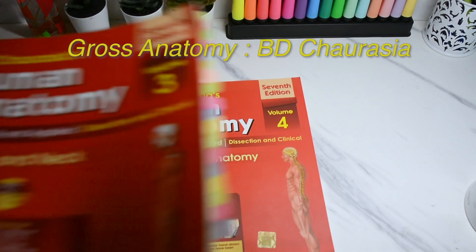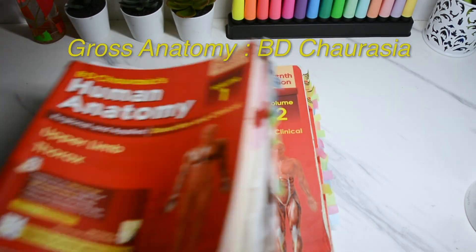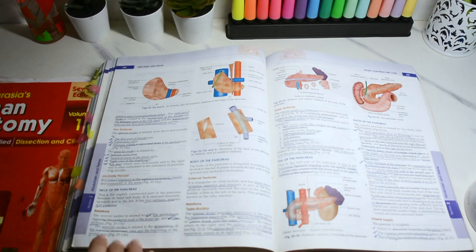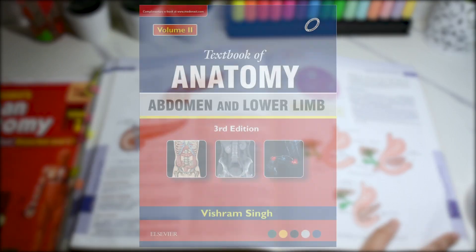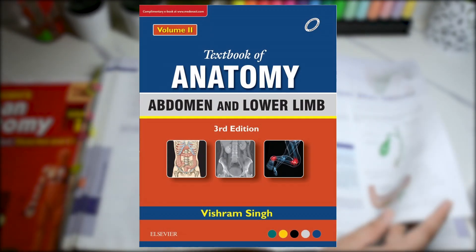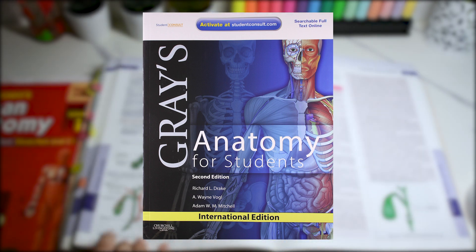For gross anatomy I used BD Chaurasia. The language used by the author is easy to understand, diagrams are easily remembered during the exams. Books by Vishram Singh are also very used but I stuck to BDC. The standard books are Gray's Anatomy student editions but it's a more PG oriented book.